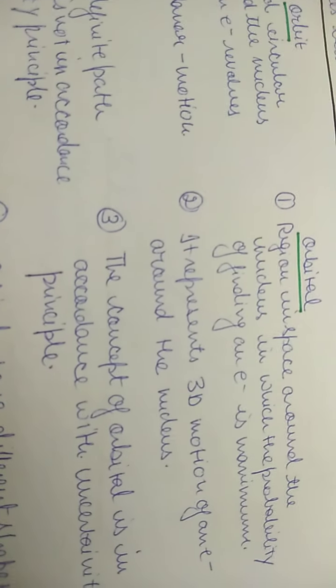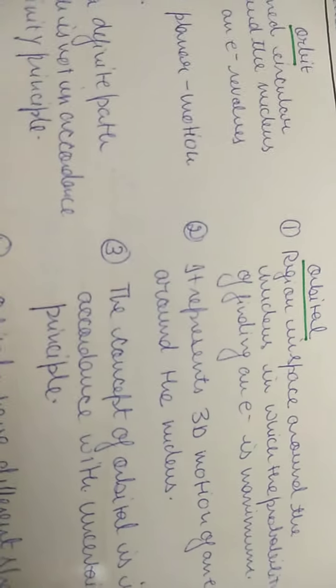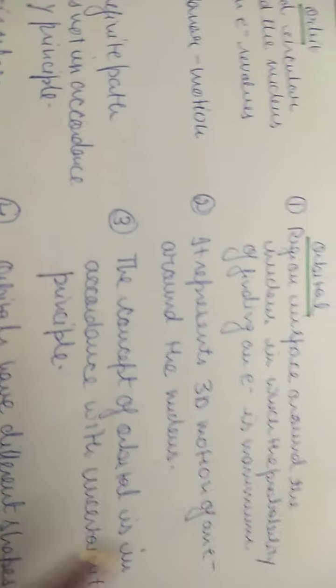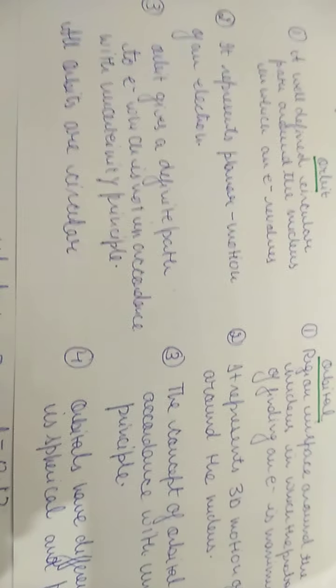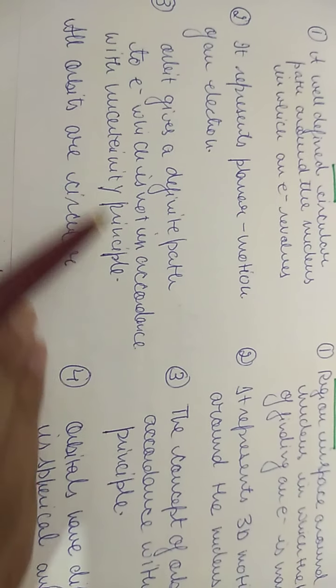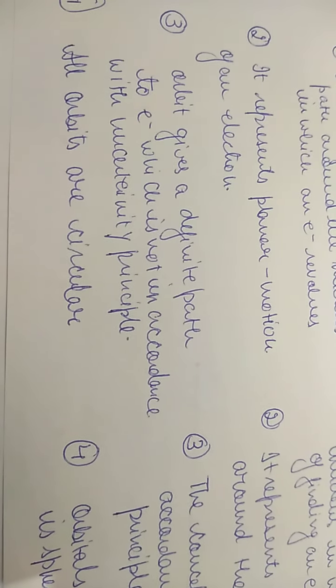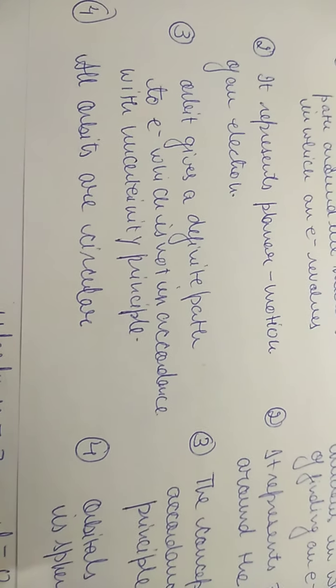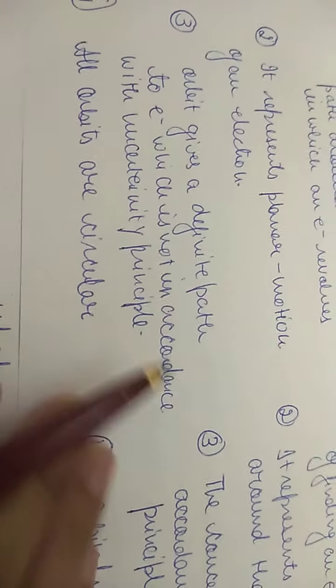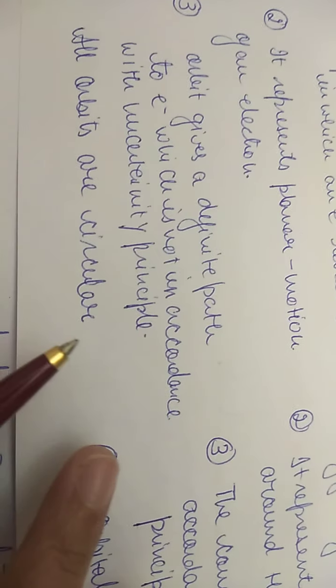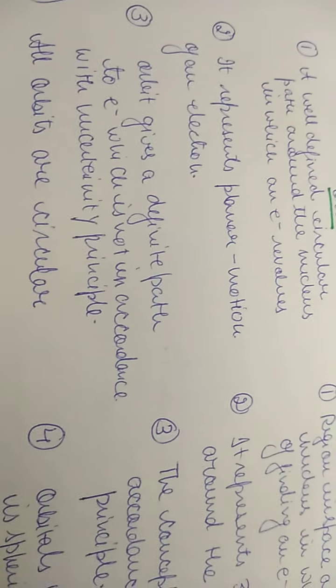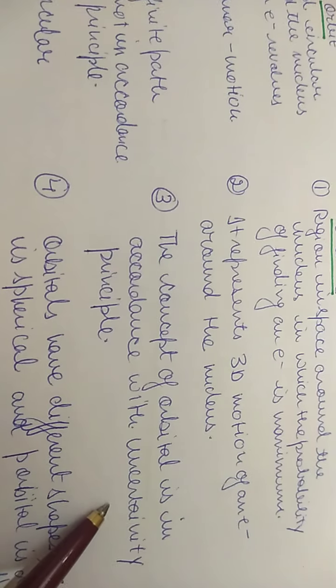The Schrödinger wave equation comes across three coordinates — X, Y, and Z — so it is a three-dimensional equation. It represents three-dimensional motion of the electron around the nucleus. Also, an orbit gives a definite path to the electron, which is not in accordance with Heisenberg's uncertainty principle, since it is impossible to simultaneously determine momentum and position of a microscopic object. The concept of orbital, however, is in accordance with the uncertainty principle.